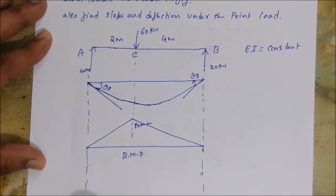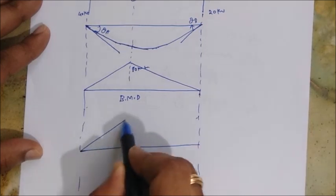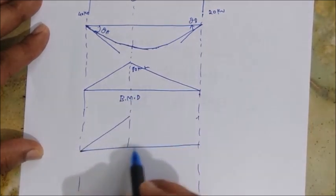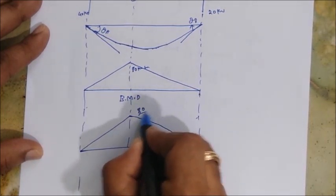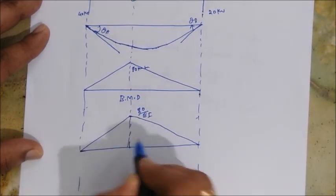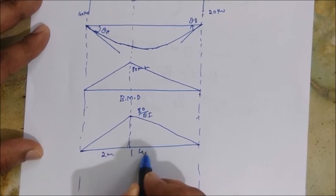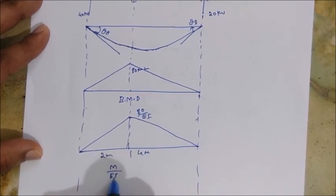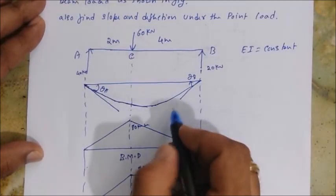Next, draw the M/EI diagram. Since EI is constant, there are no changes from the bending moment diagram. The M/EI diagram has a value of 80/EI. The span is 2 meters on the left and 4 meters on the right. This is the M/EI diagram — label it accordingly.